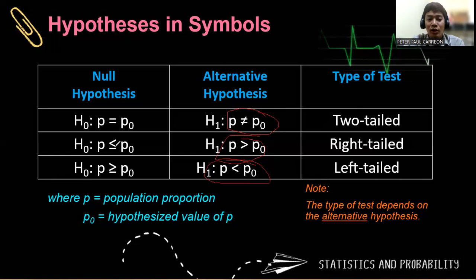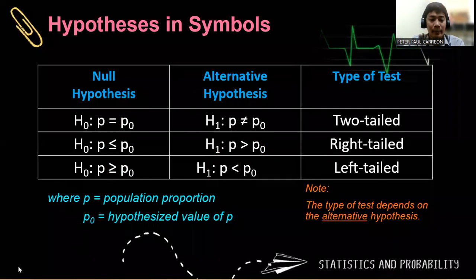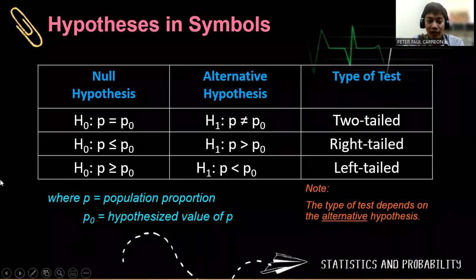Remember that the null hypothesis always has the equal sign. Equality is always present in the null hypothesis, while in the alternative hypothesis we have the three inequalities: not equal to, greater than, and less than symbols respectively. Always refer to the alternative hypothesis.